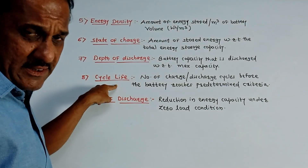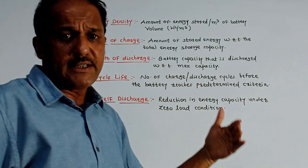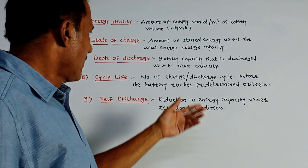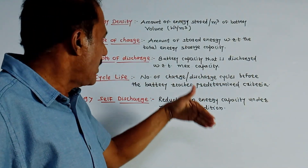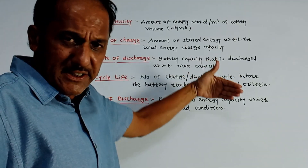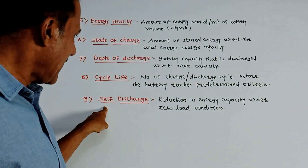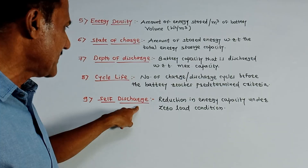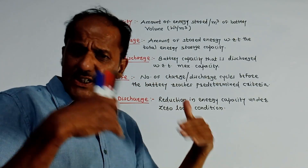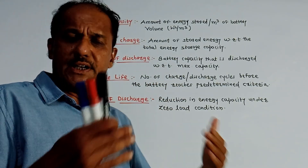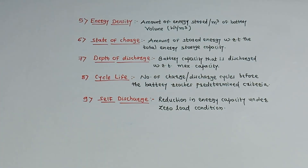Cycle life refers to how many times the battery is charged and discharged before it reaches a predetermined criterion, such as predetermined energy levels. The last parameter is self-discharge, which represents the self-discharging capacity of the battery when there is no load — that is, under zero load conditions.